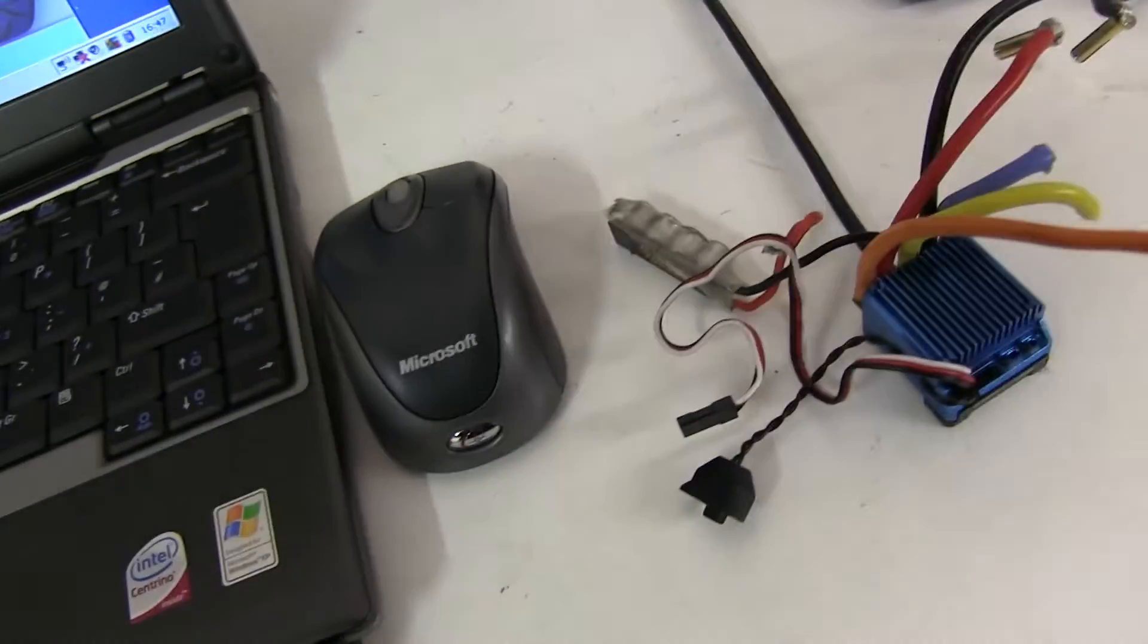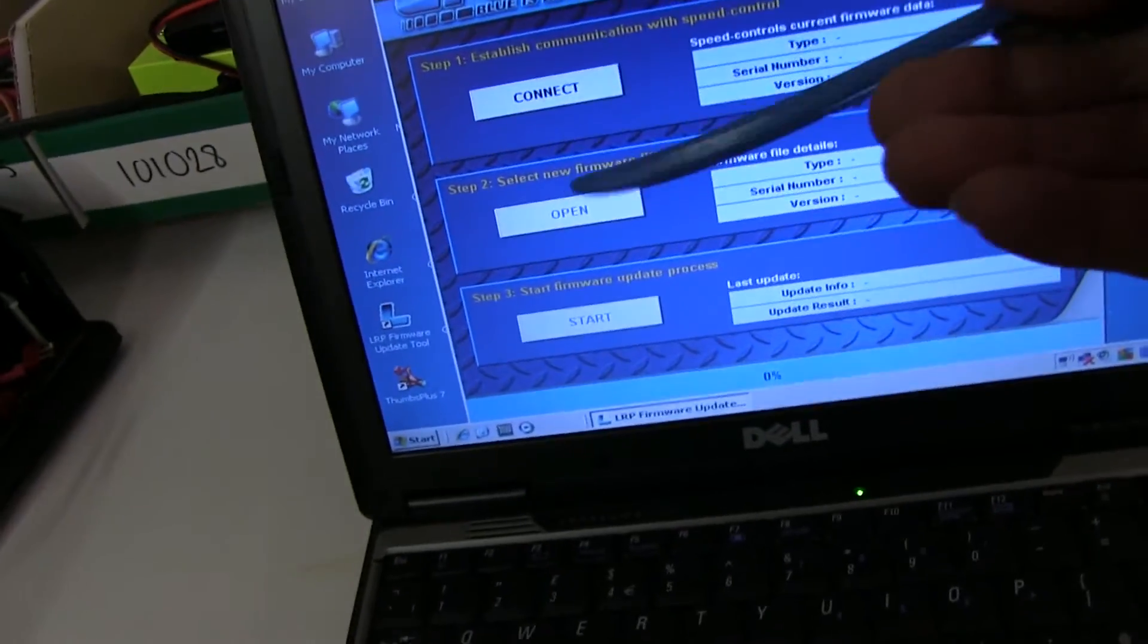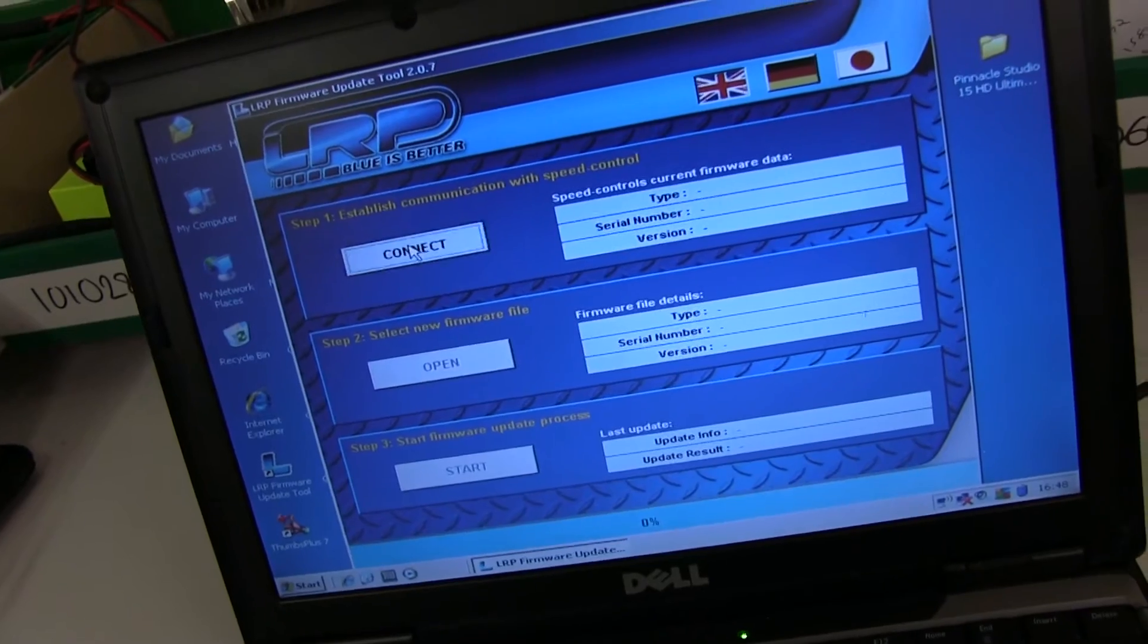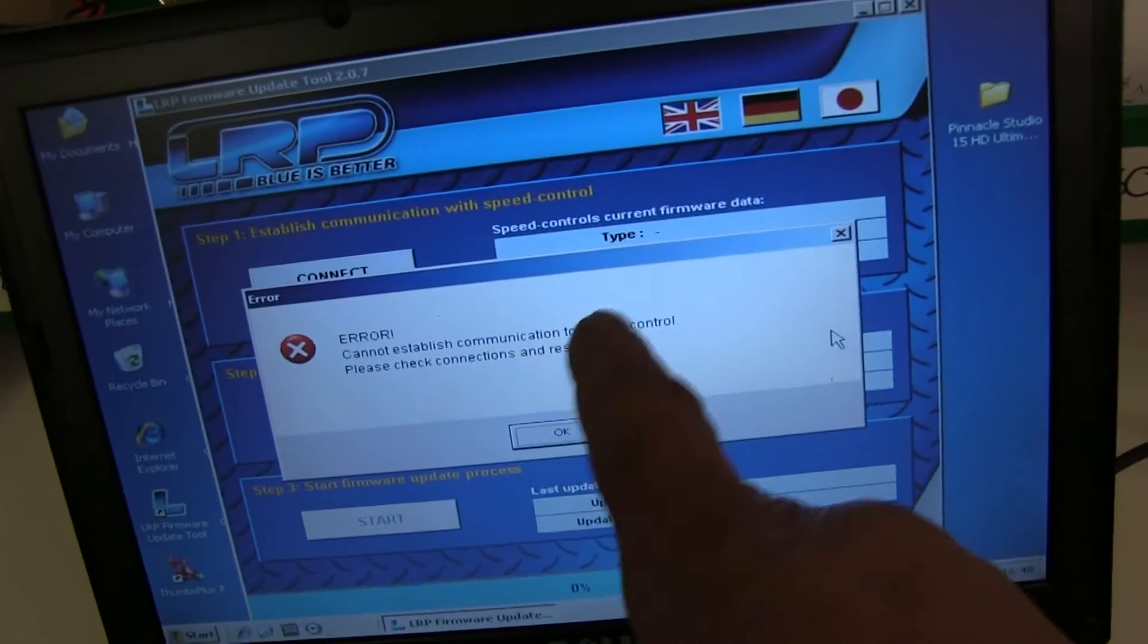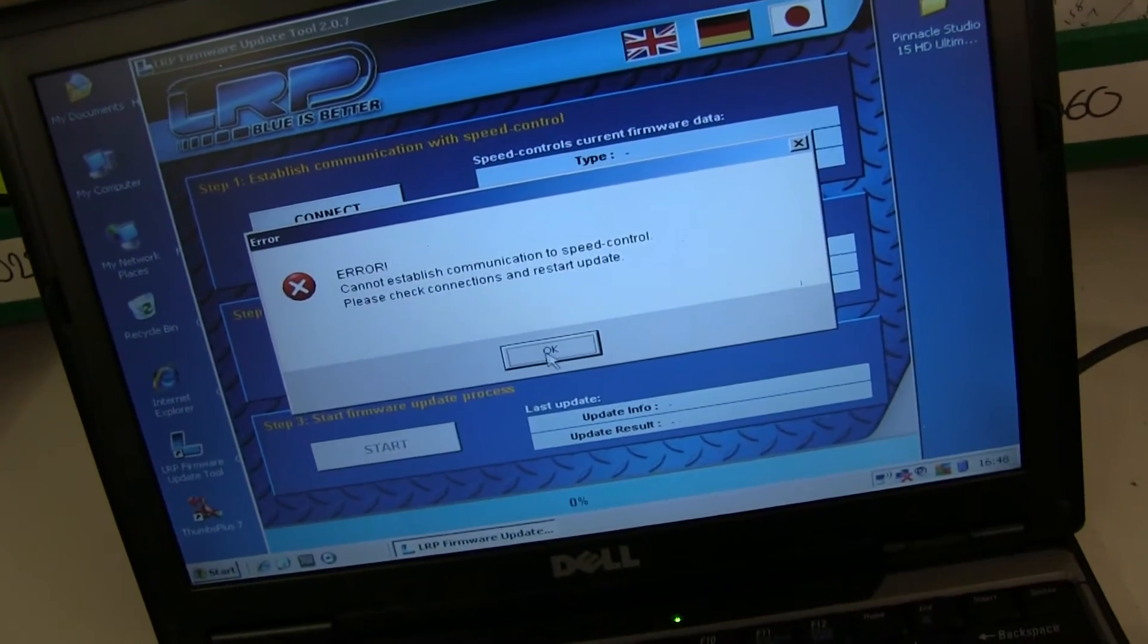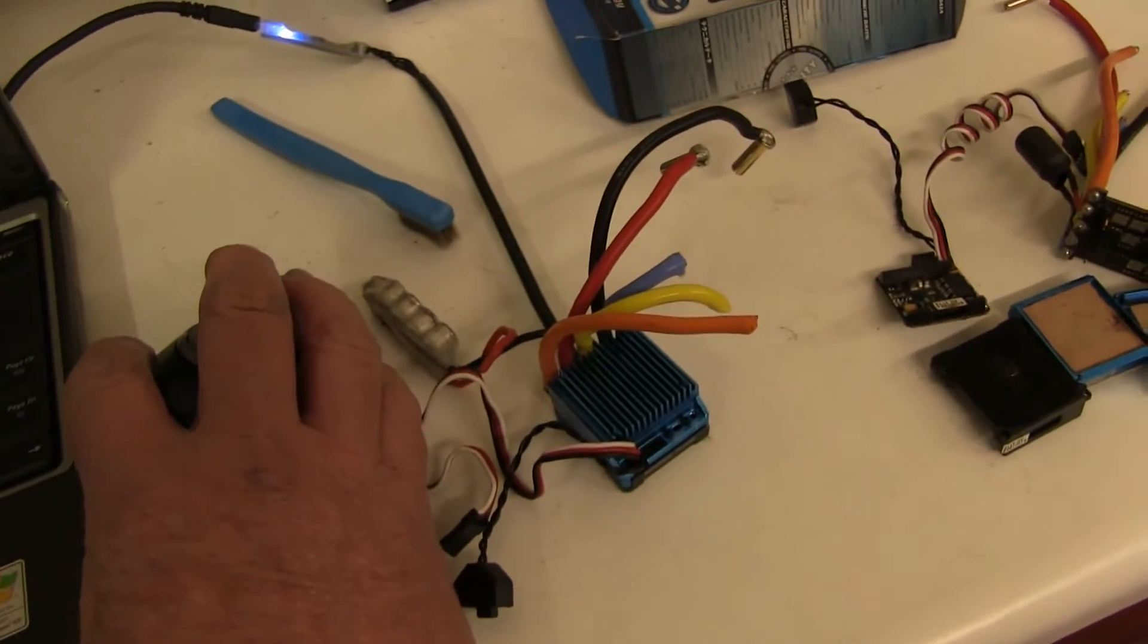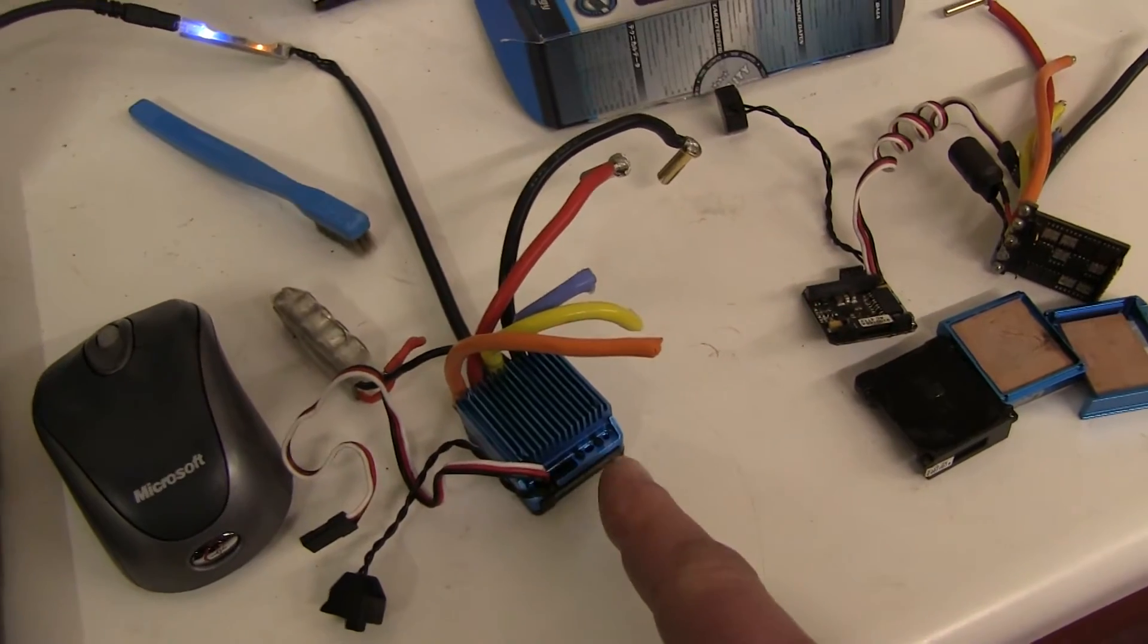The speedo doesn't need any power, it's powered through the USB. Some speedos when you update them need to be plugged into the LiPo as well. We've got the LRP updater here and you plug in the speedo then press the connect button. It says make sure it's plugged in. You say yes and the blue light was flashing on and off there. It comes up and says error cannot communicate with speed control. I'll show you that again. The blue light is on and it goes off and it says it's not.